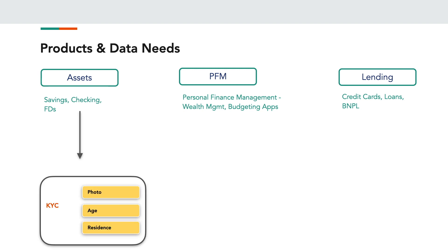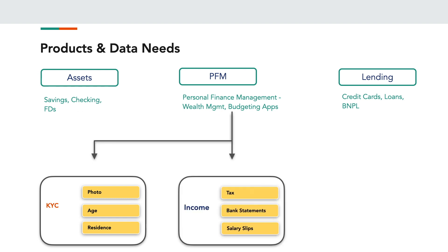In case of asset products like personal assets, these institutions typically only ask for KYC-related documentation like photos, age, and residence proofs. Whereas in case of personal finance management applications, the institutions demand not just KYC data — they also want to know about the various income sources and the various assets and liability information. How do they obtain them? Usually from bank statements, salary slips, tax statements, etc.